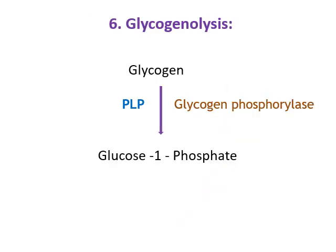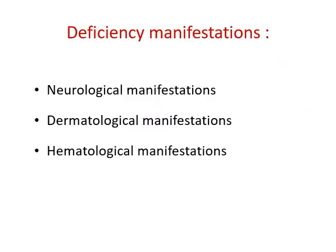The next function is glycogenolysis. The enzyme glycogen phosphorylase is covalently bound to pyridoxal phosphate. Glycogen phosphorylase is the rate-limiting enzyme for glycogenolysis, and it needs PLP as a coenzyme for its action. Since the majority of PLP is present in muscles, muscle is the main region where PLP is responsible for glycogenolysis.